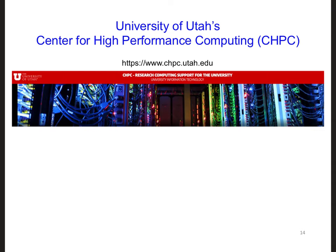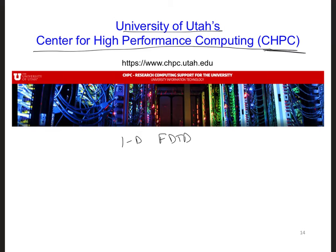Specifically, we're going to run a basic one-dimensional FDTD code on a supercomputer hosted at the University of Utah's Center for High Performance Computing, CHPC. To do this, you can either use Fortran or C++, but I recommend you use Fortran because Fortran and MATLAB largely follow the same programming style.